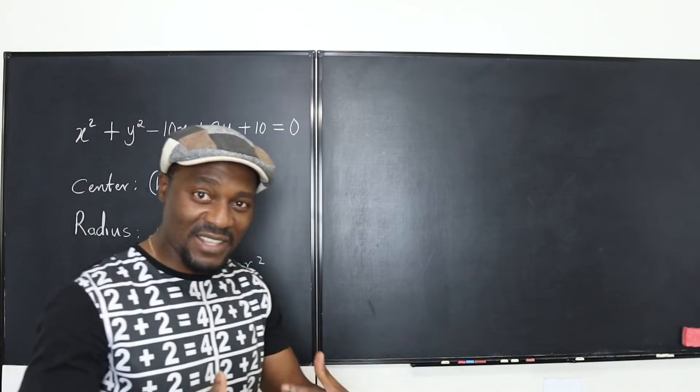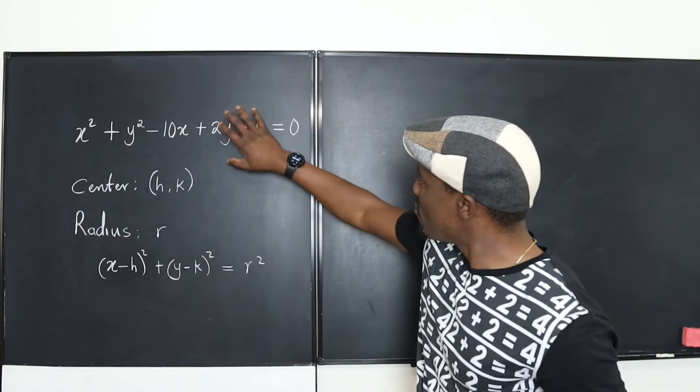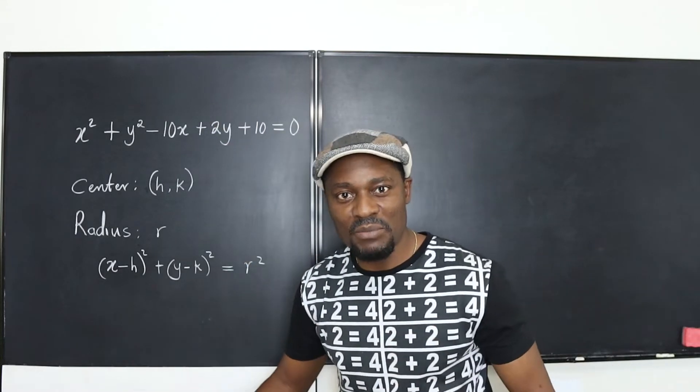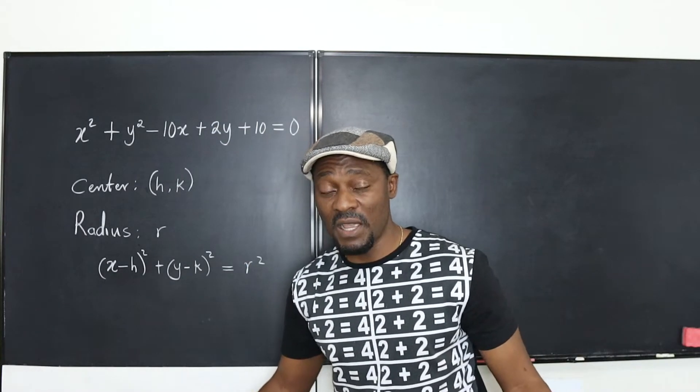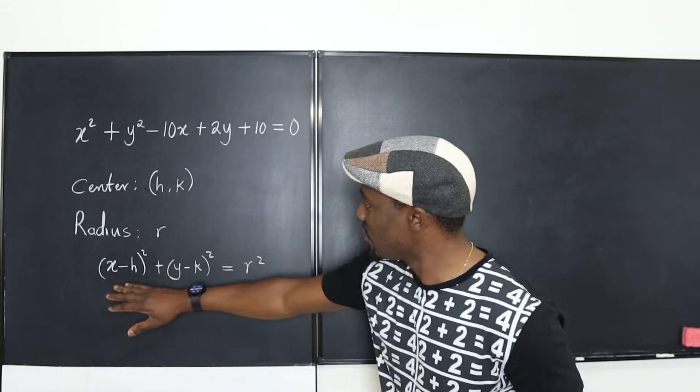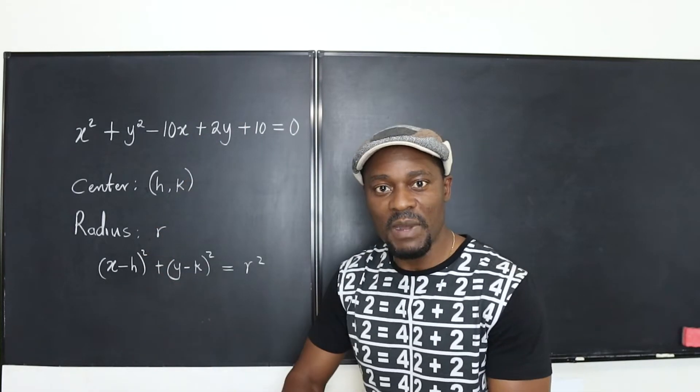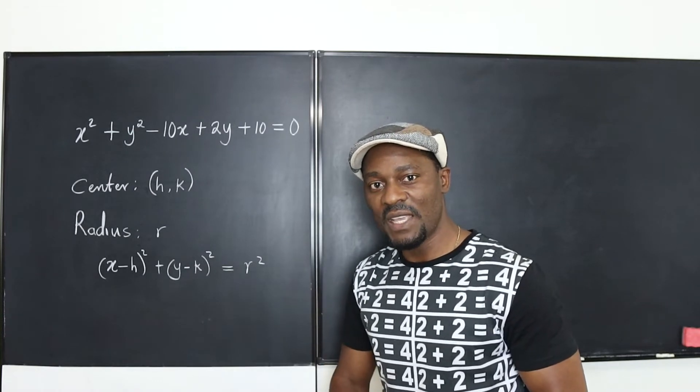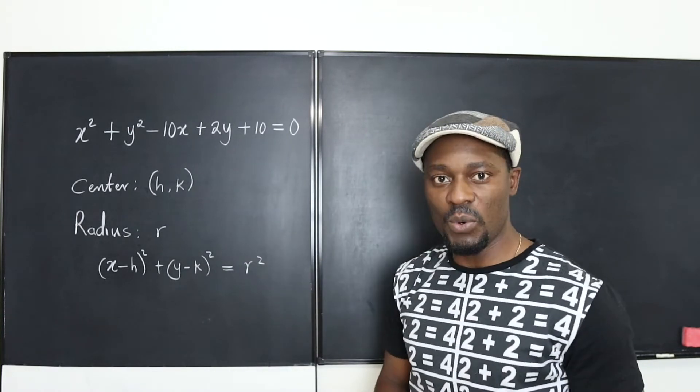My task at this moment is to rewrite this using algebraic manipulation, completing the squares in particular, to look like the standard form. As soon as it looks like this, I have my center and radius. Let's do that on this side of the board.